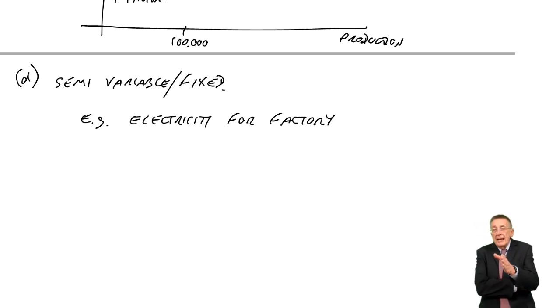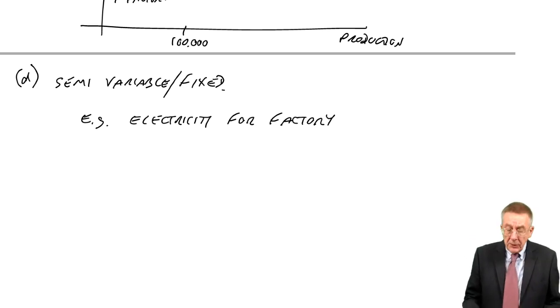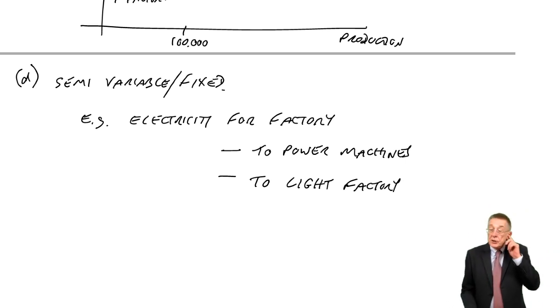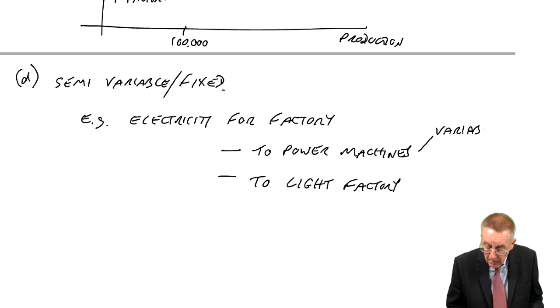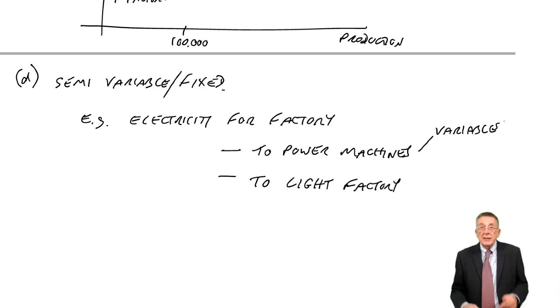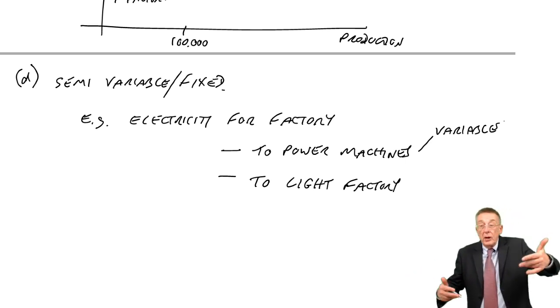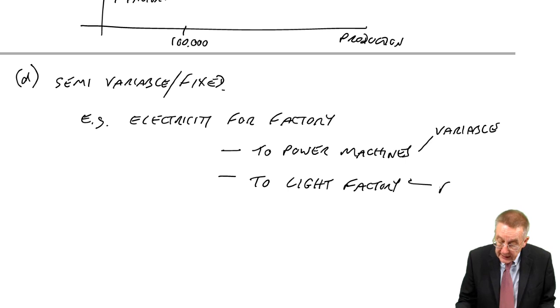For instance, electricity for a factory. Maybe we get one electricity bill each month. But we're using electricity for two things. We're using it to power the machines, and in addition we're using electricity to light the factory. Powering the machines is going to be variable. The more we produce, the more we use the machines, the more the cost will be. Lighting the factory, maybe I need the lights on however many I'm producing, whether it's one or 100. And so this is more likely to be fixed.